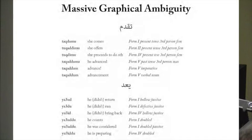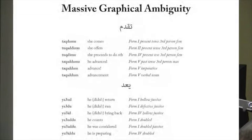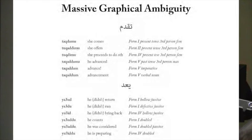Arabic is blessed with what I call massive graphical ambiguity. This is partly caused by the not writing of short vowels, which I illustrated earlier. But even when you do write the short vowels, you have phonological ambiguity. There are certain words where you just cannot get what you want — you get too much of other things.